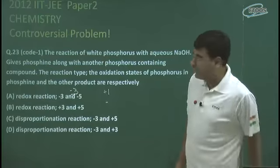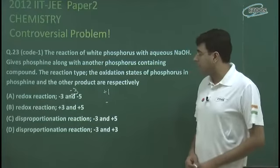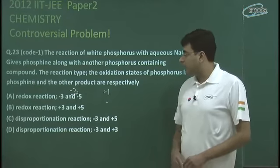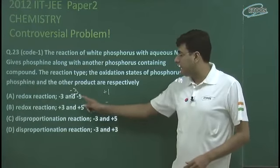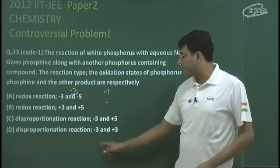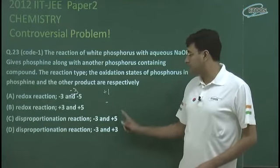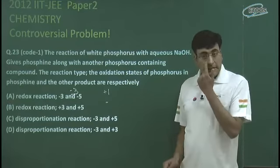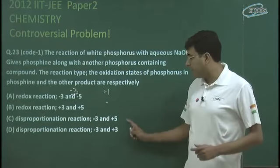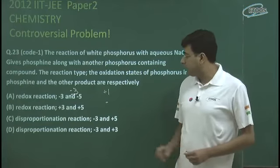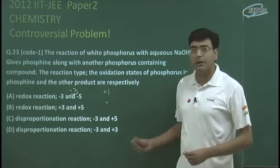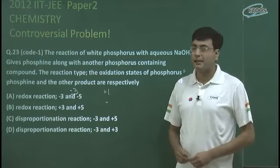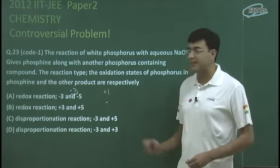It is a disproportionation reaction, so we need to answer from option C or D. But the oxidation number of minus 3 and plus 1 doesn't match the given options. So if students have done the question, they will be wrong — we need to be careful about which options to choose. These questions cause students to waste time.